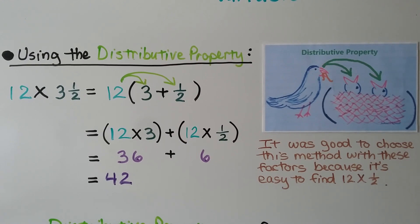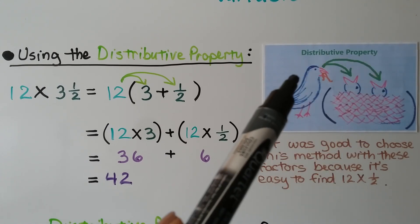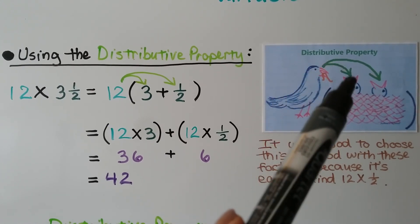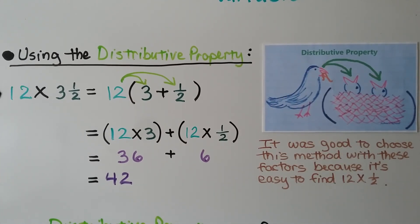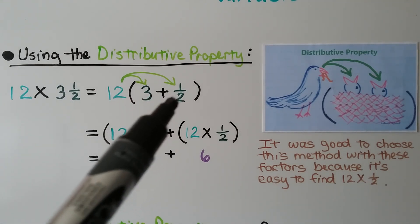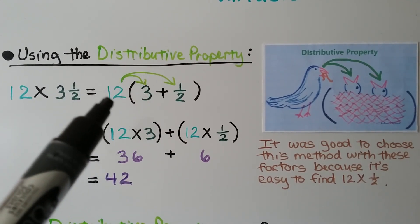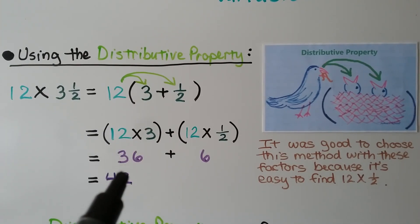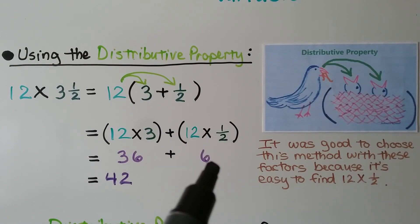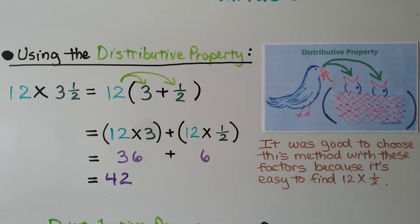We can also use the distributive property — like a mother bird feeding her babies in a parenthesis nest. She's on the outside, and each baby bird inside gets a turn. So for 12 times 3 and a half, we break 3 and a half into 3 plus a half, and 12 is multiplied to each: 12 times 3 is 36, and 12 times a half — half of 12 — is 6. 36 plus 6 is 42. This method works well here because it's easy to find half of 12.